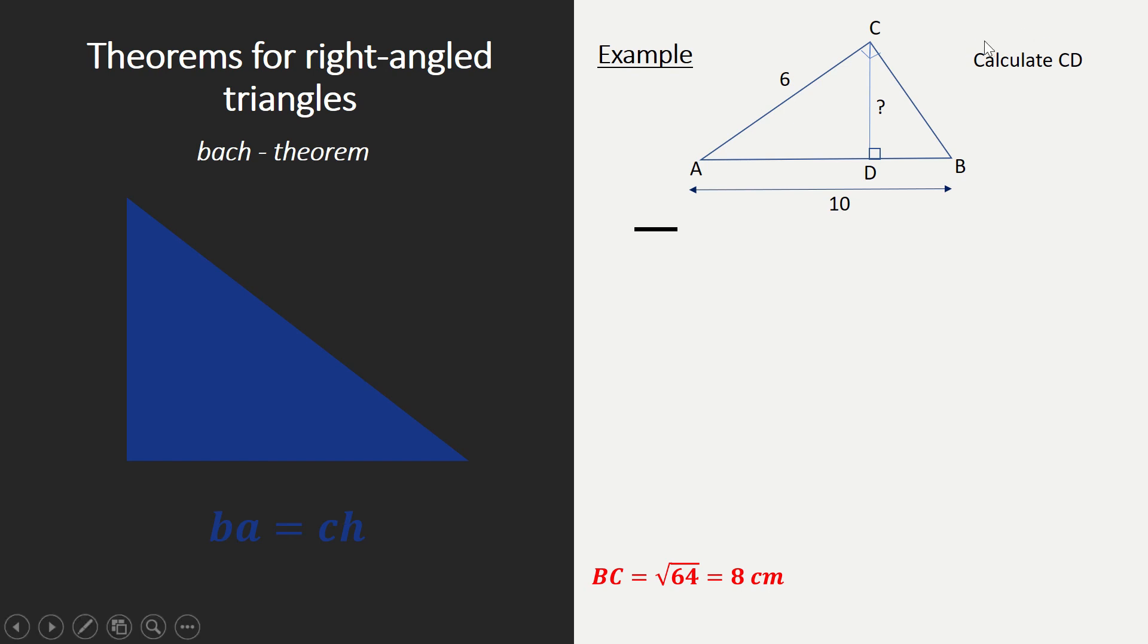Because we want to calculate CD. CD is over here and it's part of a right-angle triangle. That's what we can see, of a right-angle triangle DBC. So we can check if we can use a Pythagorean theorem. But in this case we cannot because we do not know DB, we do not know BC, and we do not know CD. So we can't use it.